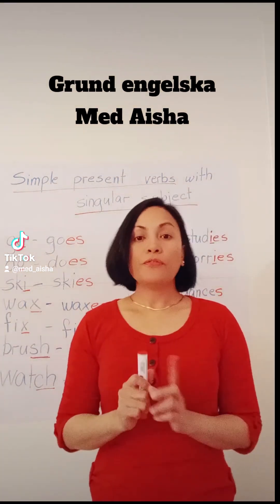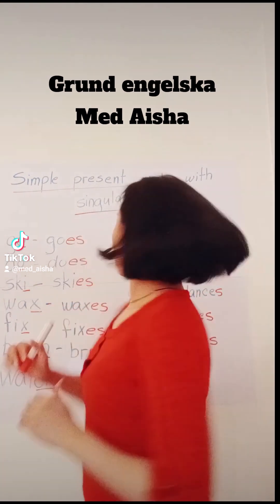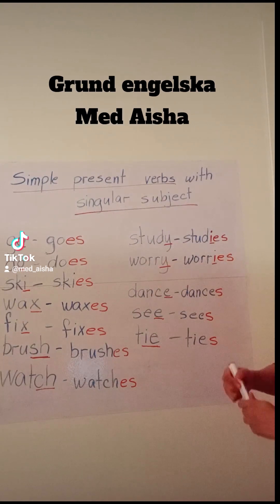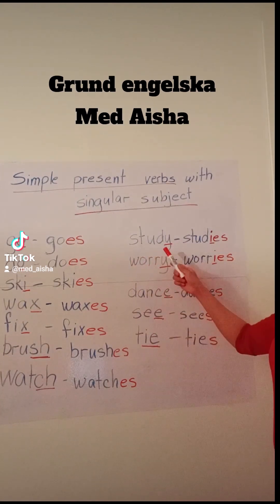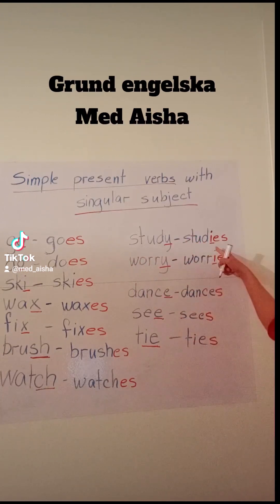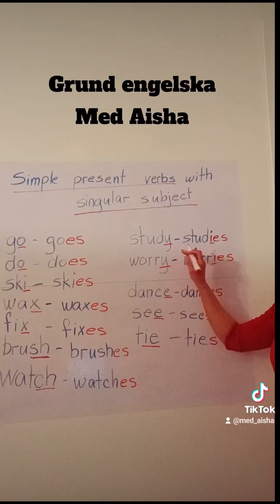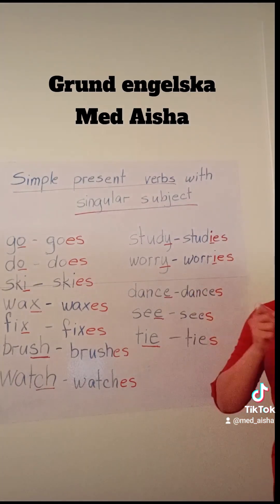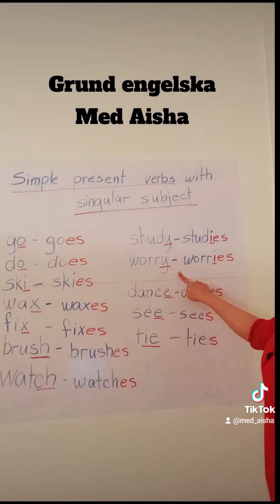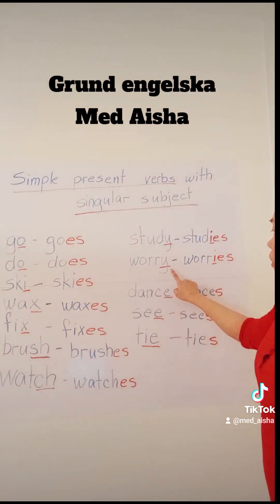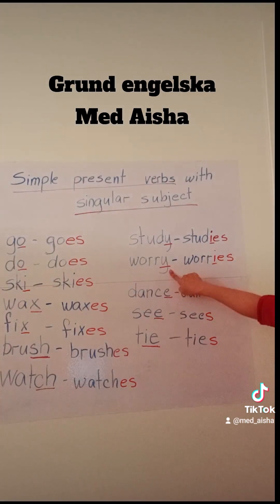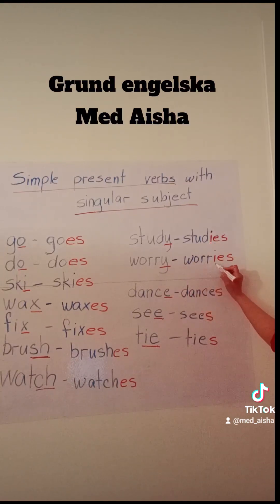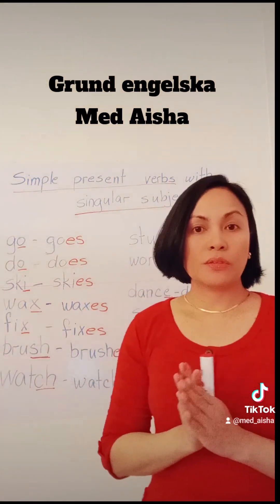The next rule is, if your verb ends with Y — like, for example, STUDY — STUDY becomes STUDIES. In this rule, change your Y to I, and then add ES. Next is WORRY. So, it ends with Y. Change your Y to I, and add ES. So, change your Y to I, and then add ES. That is the rule if your verb ends with Y.